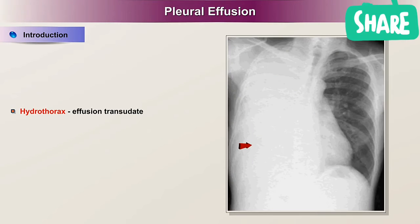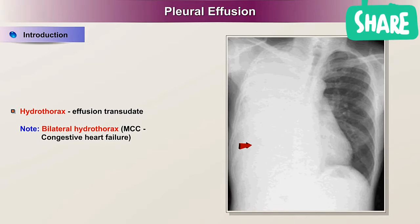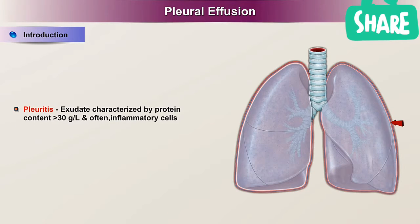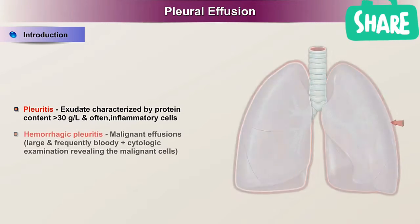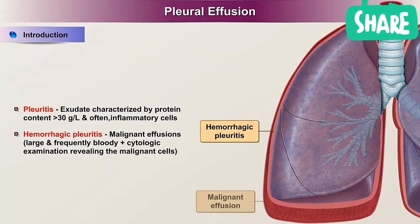Hydrothorax: effusion is a transudate. Note that congestive heart failure is the most common cause of bilateral hydrothorax. Pleuritis: an exudate characterized by protein content greater than 30 g per liter and often inflammatory cells. Hemorrhagic pleuritis: malignant effusions, which are large and frequently bloody, with cytologic examination revealing the malignant cells.